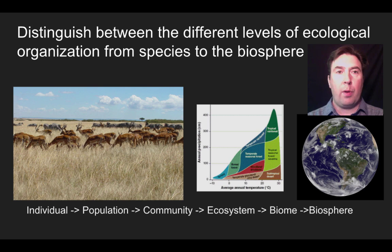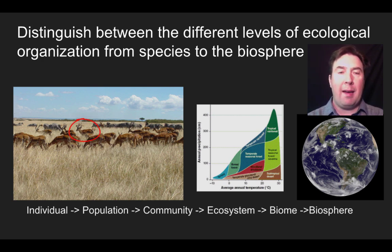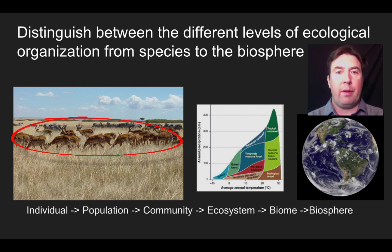We're going to distinguish between the different levels of ecological organization from species up to the biosphere. Looking at the diagram on the left, I want to focus on one of these antelopes in the foreground — that is an individual. Sometimes it's referred to as a species. If we look at the whole group of antelope that live within this given area, we call that a population — a group of the same type of living thing that live in the same area.